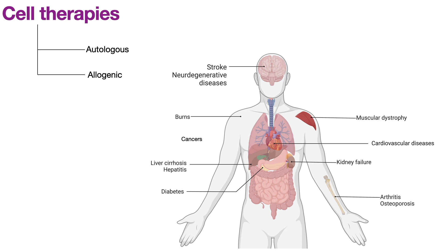The second type is allogeneic cell therapy, which refers to cells from one organism used to treat other individuals of the same species. One clinically approved example is the use of cord blood-derived hematopoietic progenitor cells from a donor to treat leukemia, lymphoma, and other genetic and acquired blood-related diseases. Stem cell therapy is an emerging field with a lot of promise. In the next video, I will discuss important cell signaling pathways in stem cell biology and how they are targeted in cell therapies.